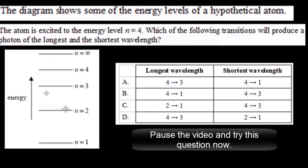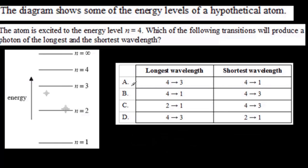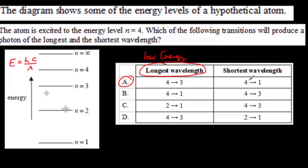Another IB question. The correct answer is A. Remember that photon energy varies inversely with wavelength: a long wavelength means a low energy photon and a small energy difference, while a short wavelength means high energy and a big energy difference. We're looking for the maximum energy difference, which would be from 4 to 1, and the minimum energy difference, which would be from 4 to 3, because that gap is the smallest and the other is the largest.